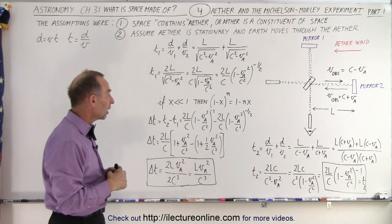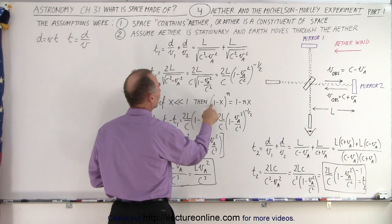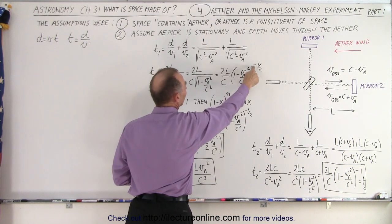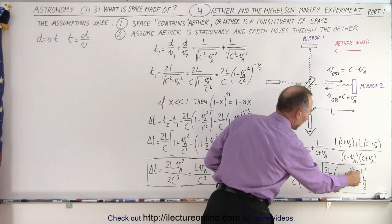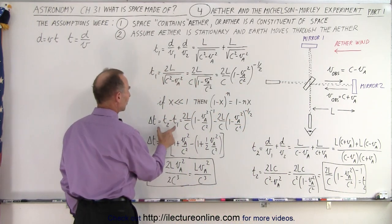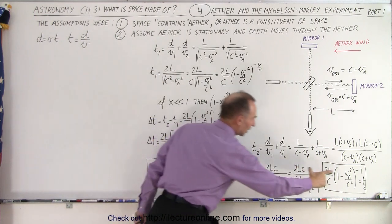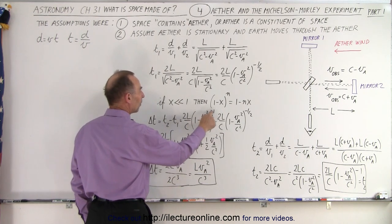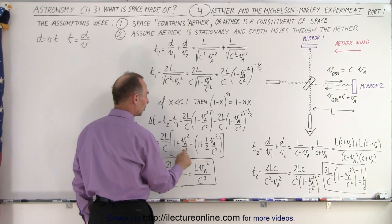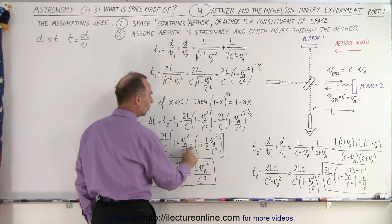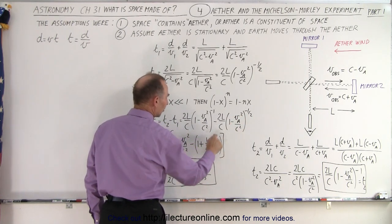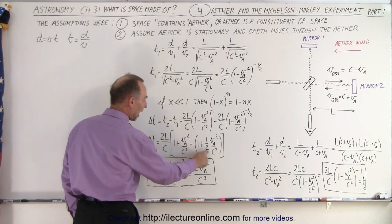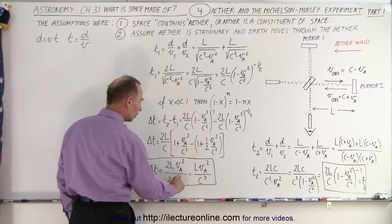Now we use the concept that if x is much, much smaller than one, then one minus x to the n power can be approximated as one minus n times x. So T2 can be written as one minus this times negative one, and T1 as one minus this times negative one-half. Taking the difference between T2 and T1 and factoring out two L over C, we get one plus V_A squared over C squared, minus one plus one-half V_A squared over C squared. The ones cancel out and we're left with one-half of that, so it's one over two C squared.